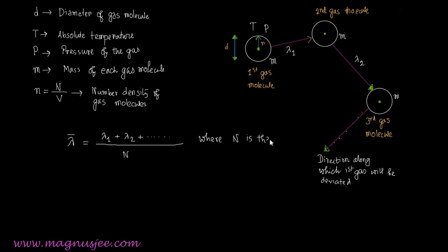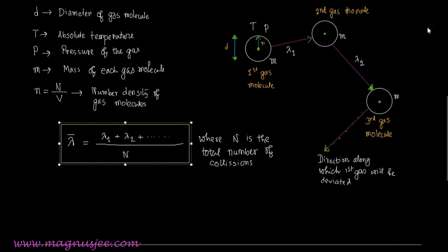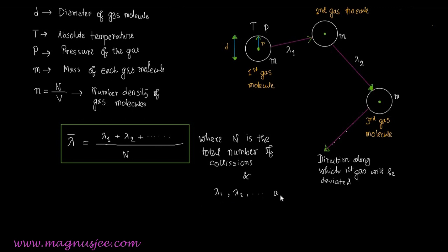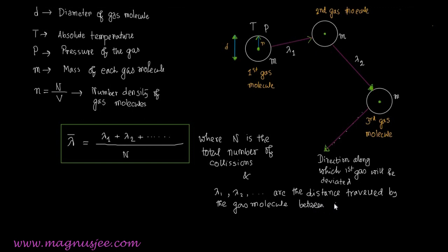N is the total number of gas molecules and also the total number of collisions — the first gas molecule will collide with N number of gas molecules. Lambda 1, lambda 2, lambda 3, ... are the distances traveled by the gas molecule between different successive collisions.